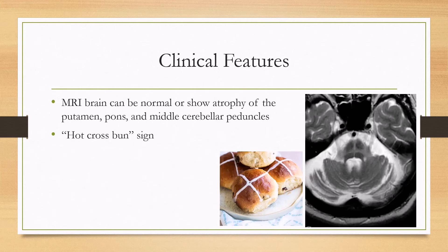On MRI of the brain, it can either be normal or show characteristic findings in the pons. There can be atrophy of the putamen, pons, and middle cerebellar peduncles. In particular, there is a hot cross bun sign — named after what hot cross buns look like — due to degeneration of the transverse fibers, producing this characteristic appearance of the pons on MRI.